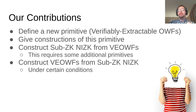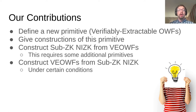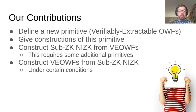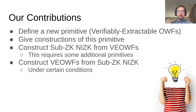That brings me to our contributions in this paper. We define a new primitive which is a variant of an old primitive: verifiably extractable one-way functions. We give some constructions of this primitive, showing how constructions in the literature satisfy our definition. We then construct subversion-ZK NIZKs from these verifiably extractable one-way functions, or VEOWFs, along with some additional primitives. And finally, we construct VEOWFs from subversion-ZK NIZKs under certain conditions, showing there is a strong connection between the two.